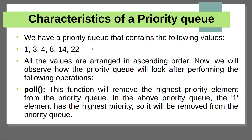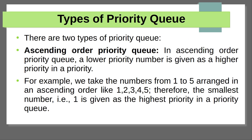Here is one example. This queue consists of 6 elements. The 1 is the first entering into the queue and 22 is the last entering into the queue. The least element has the highest priority and the highest value element has the least priority. Now we move to the types of priority queue. There are two different types: ascending order priority and descending order priority.